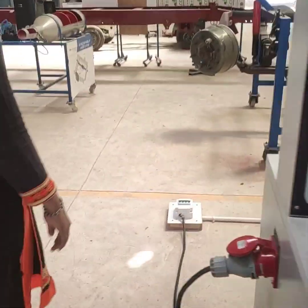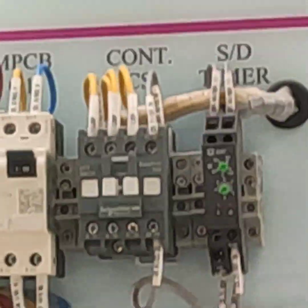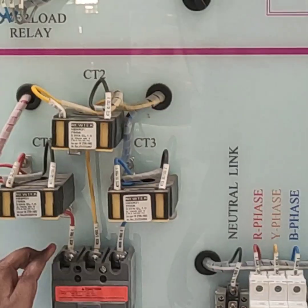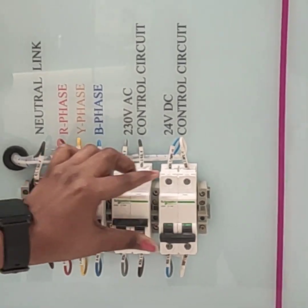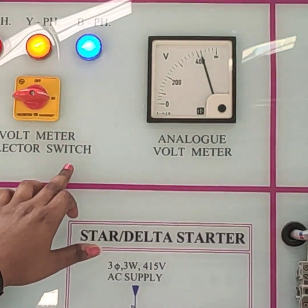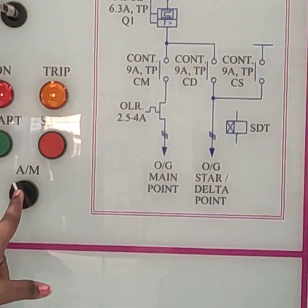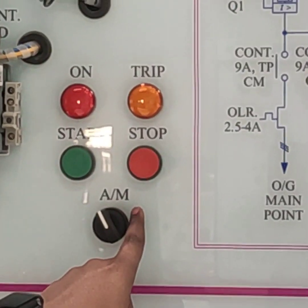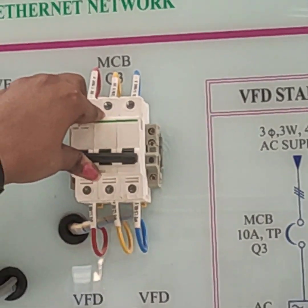Come to here, switch on the main supply and come to the simulator. Switch on first MCB Q1, switch on the main incomer line, and switch on all these MCB miniature circuit breakers. Check the position of the voltmeter selector switch — select RY mode. Here we can adjust it for automatic mode or manual mode. Next, switch on MCB Q3.